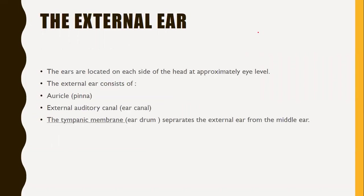First of all, the external ear. The ears are located on each side of the head at approximately eye level. The external ear consists of two parts namely auricle and external auditory canal. Then the tympanic membrane, otherwise called the eardrum, which separates the external ear from the middle ear.